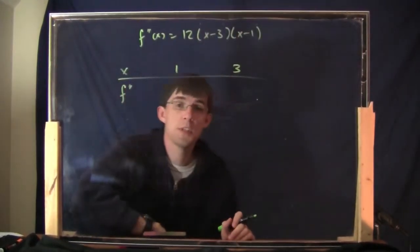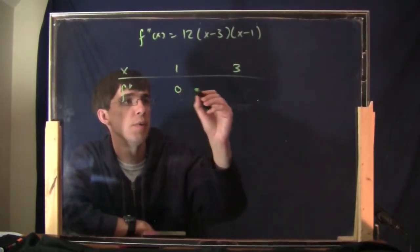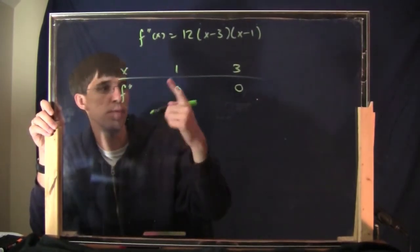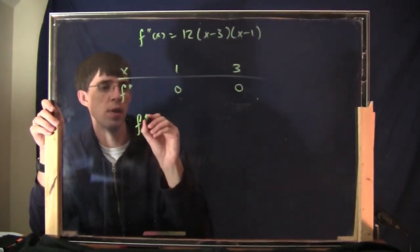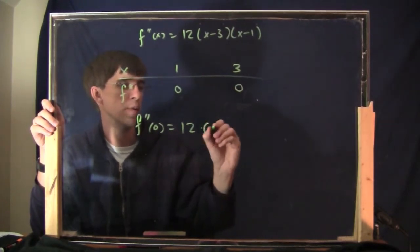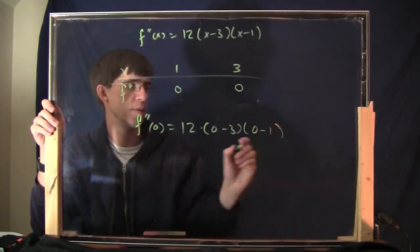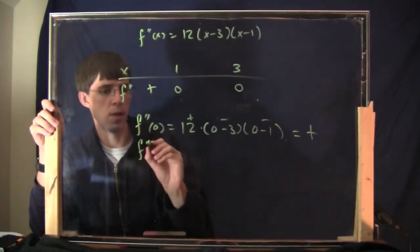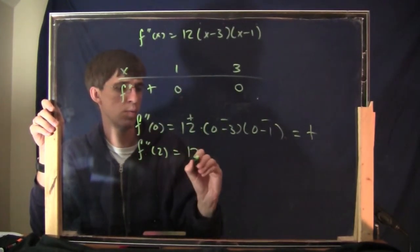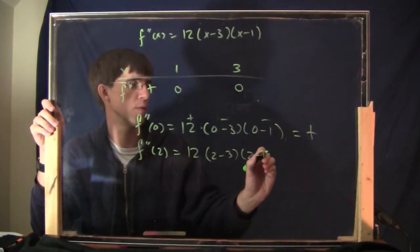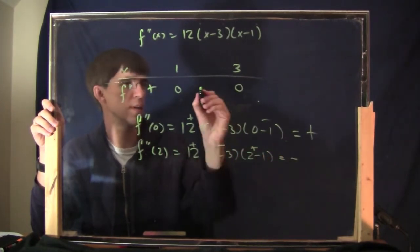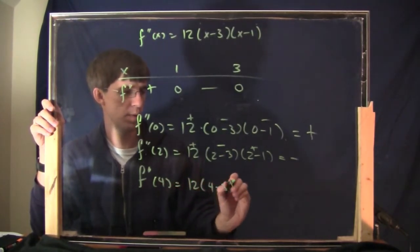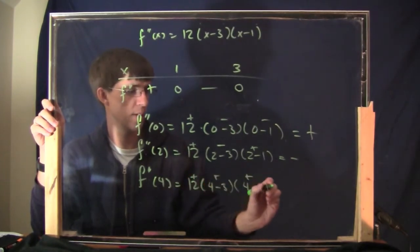Let's make our chart. The two points of interest are x equals 1 and x equals 3, where the second derivative equals zero. Plugging in x equals 0 (left of 1): 12 times (0 minus 3) times (0 minus 1) is positive times negative times negative, which is positive. Plugging in x equals 2 (between 1 and 3): positive times negative times positive, which is negative. Plugging in x equals 4 (right of 3): positive times positive times positive, which is positive.